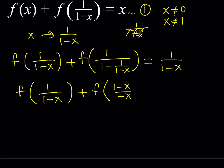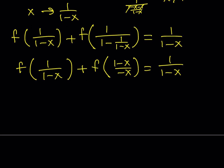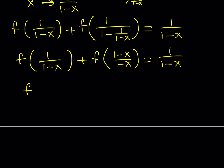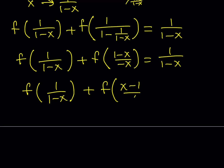We don't want to write it that way, so let's negate the top and bottom and write it as f((x-1)/x) — that looks nicer. So equation number 2 is: f(1/(1-x)) + f((x-1)/x) = 1/(1-x).